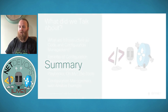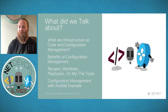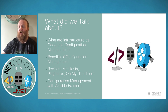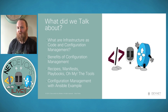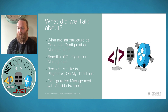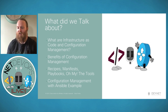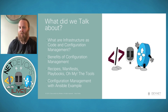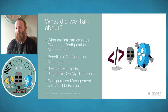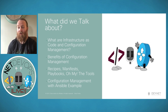Summary: we talked about what infrastructure as code and configuration management are, and looked at the benefits — saving a great deal of time whether for new builds or adding devices, with everything in source control as a single source of truth. We looked at the recipes, manifests, and playbooks in detail and explored how Ansible playbooks are constructed with YAML files. Finally, we demonstrated configuration management with Ansible running across our entire network stack in one go to bring up the whole network.